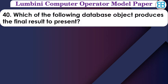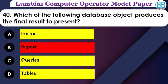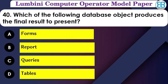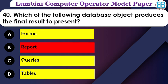Which of the following database objects produces the final result to present? The correct answer is report — a report is the database object that produces the final output presented to the user.